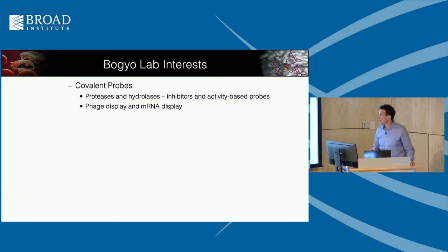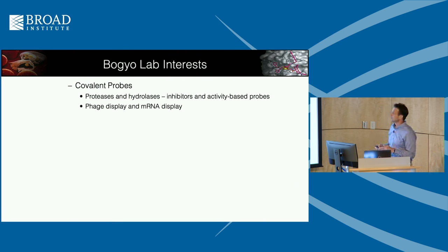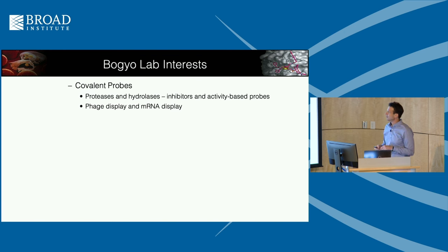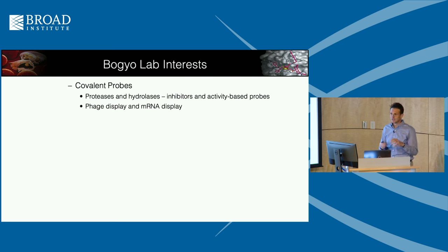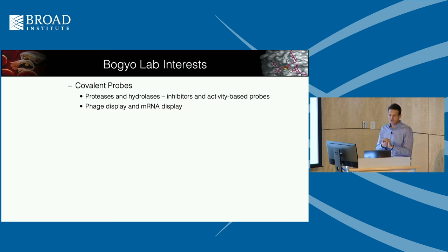We've moved into the next generation of technologies and started to apply selection techniques — phage display and more recently mRNA display, which I was doing as a sabbatical at Genentech for the first part of this year. The goal is to get better structures of ligands that bind with higher specificity to targets, so we can control both the reactivity of the covalent part and the binding energy of the ligand part to the protein target.